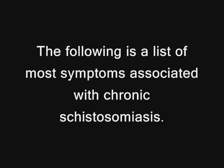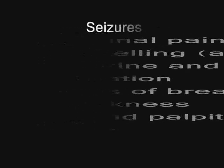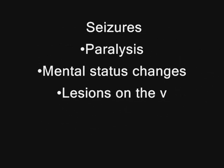The following is a list of symptoms associated with chronic Schistosomiasis: abdominal pain, abdominal swelling or ascites, blood in the urine and painful urination, shortness of breath and coughing, weakness, chest pain and palpitations, seizure, paralysis, and mental status change.